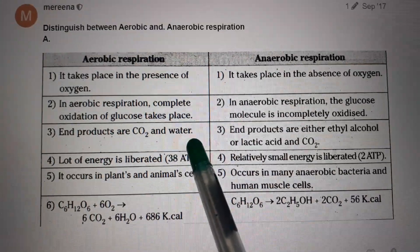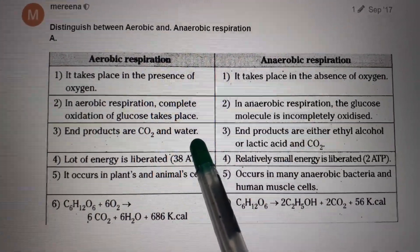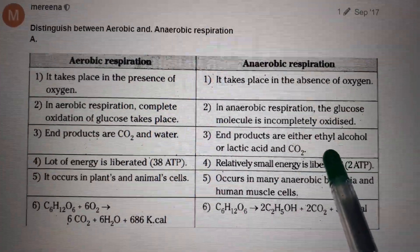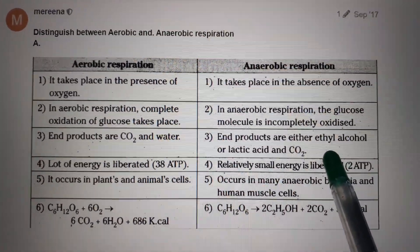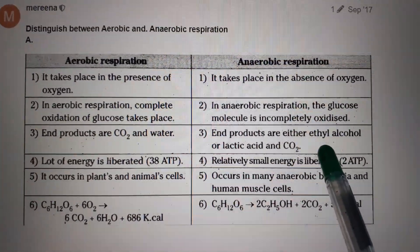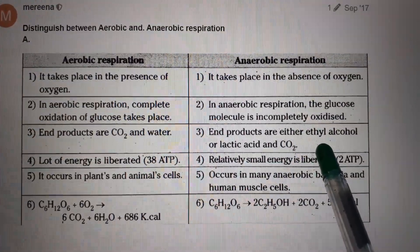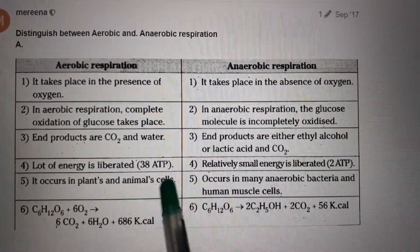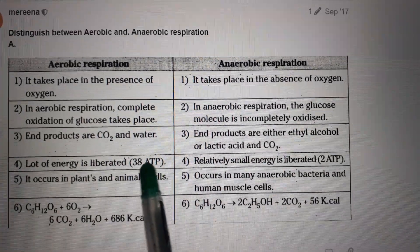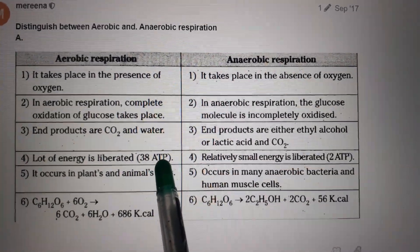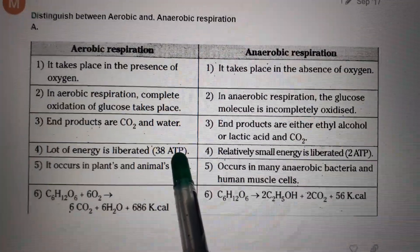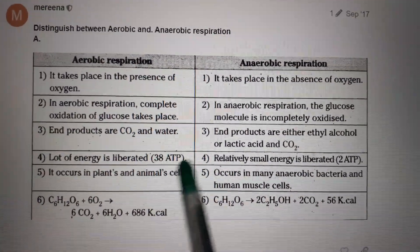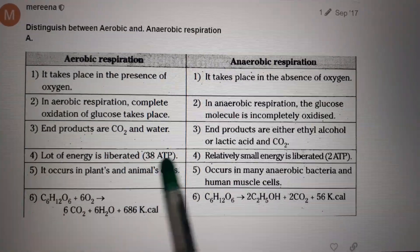The end products of aerobic respiration are carbon dioxide and water, whereas the end products of anaerobic respiration are ethyl alcohol or lactic acid. In aerobic respiration, a lot of energy is liberated — approximately 38 ATP molecules — because of the complete oxidation of the glucose molecule.